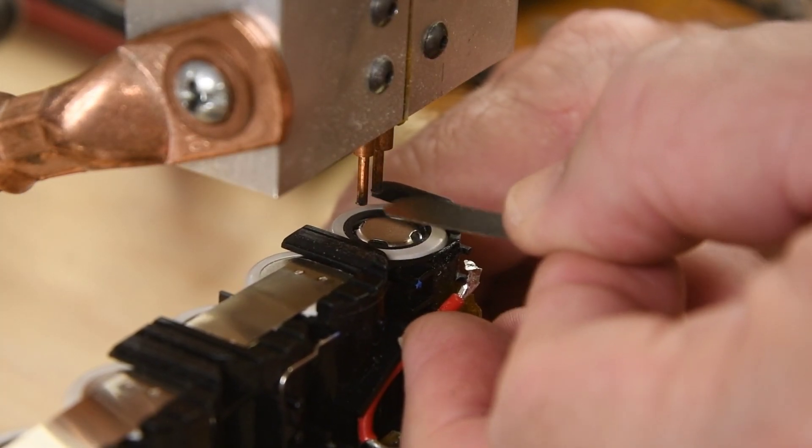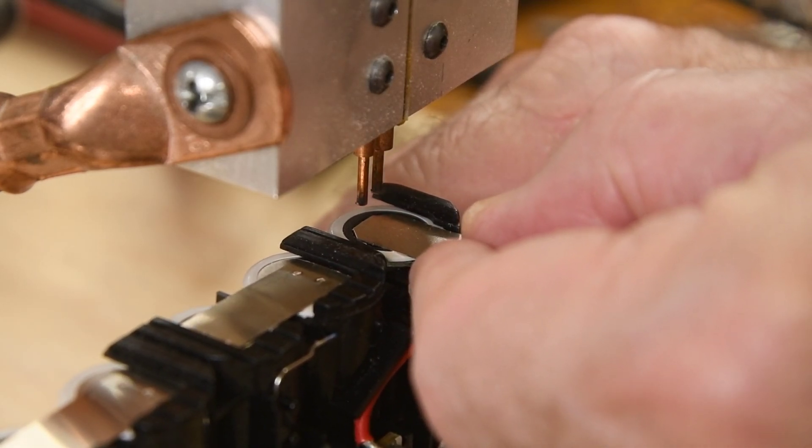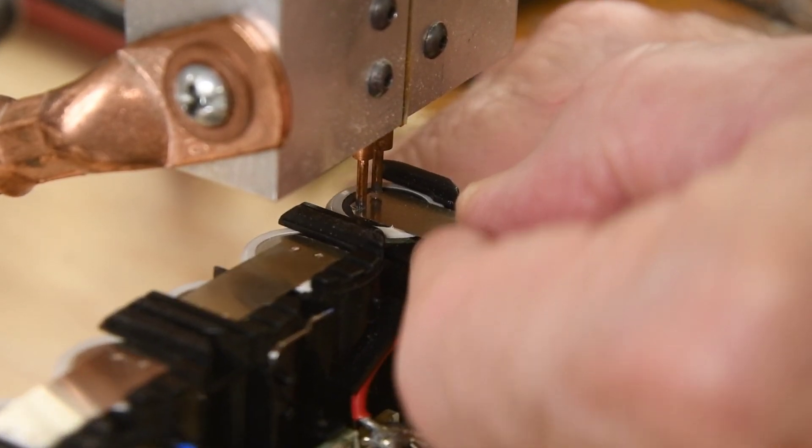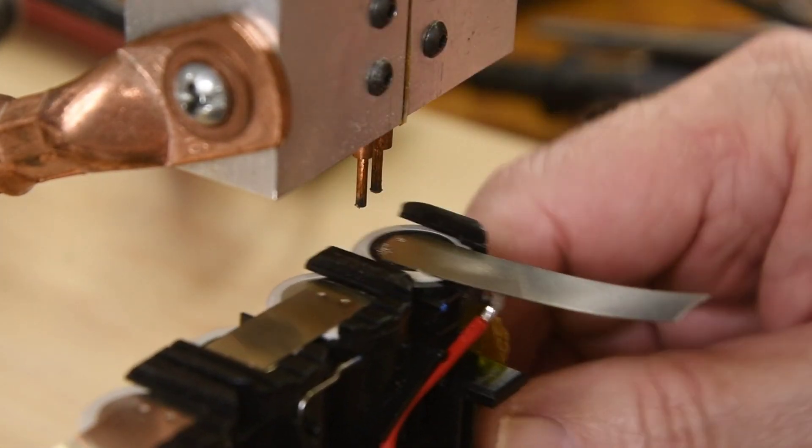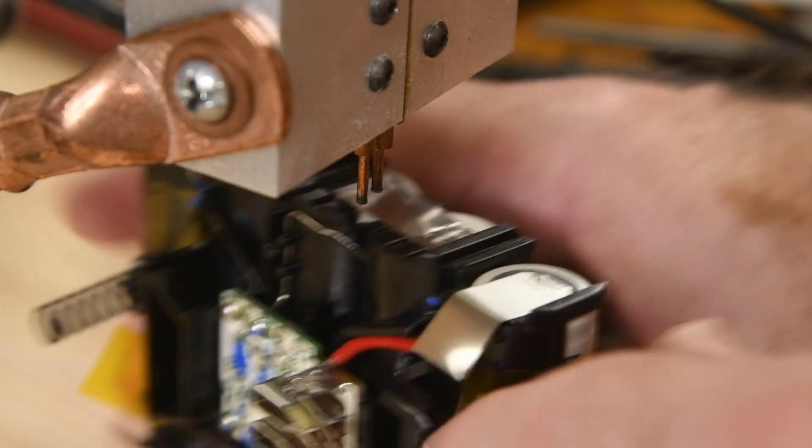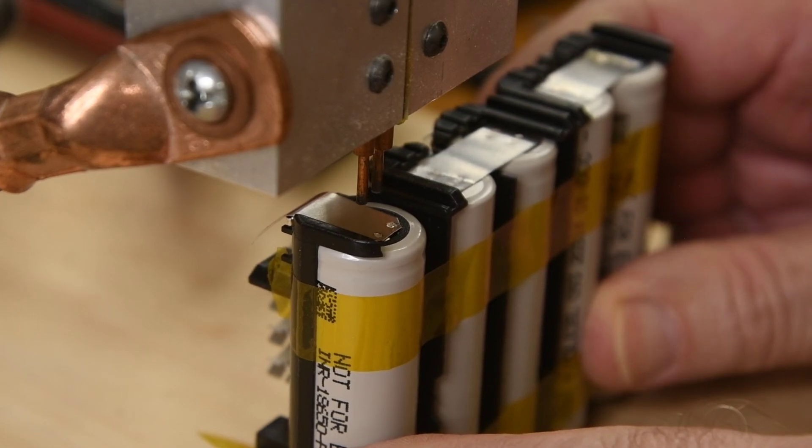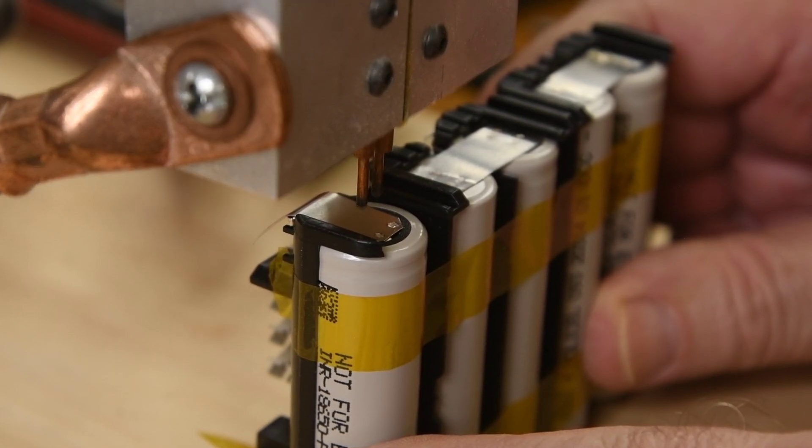For the positive terminal, I will trim off the corners of the strip. Not necessary, but I want the strip to cover as much of the cell terminal as possible. Now I will go back and add a weld to each terminal. Really, all the current has to flow through the spot welds, so I think four spots on each terminal should be good.